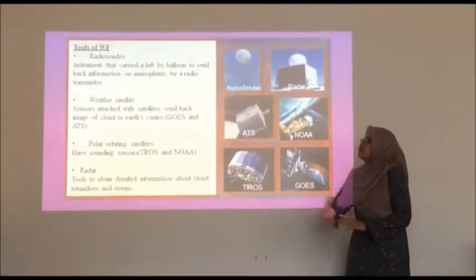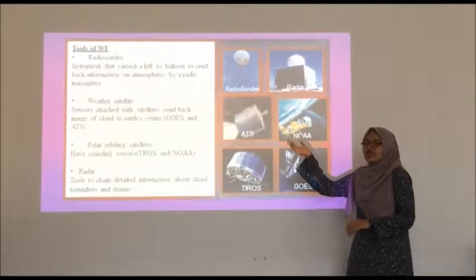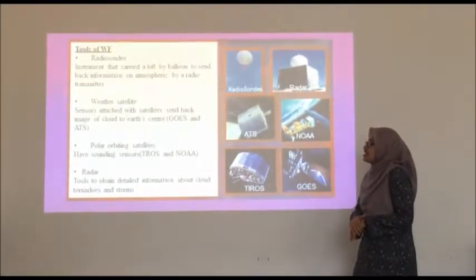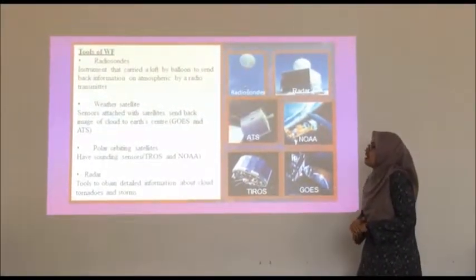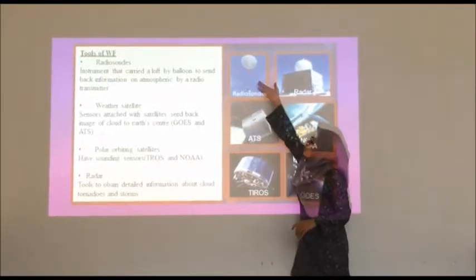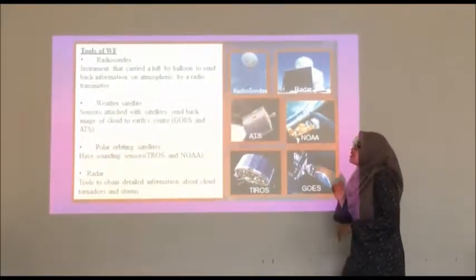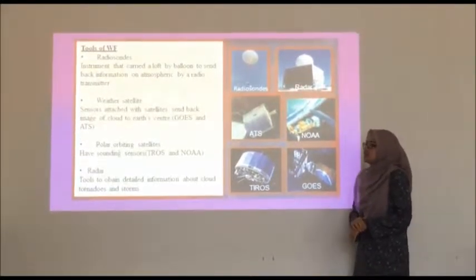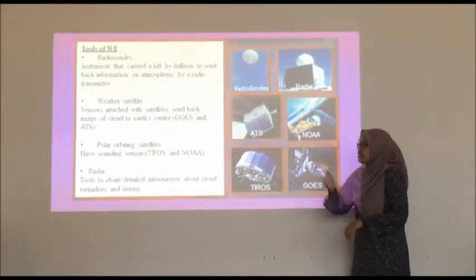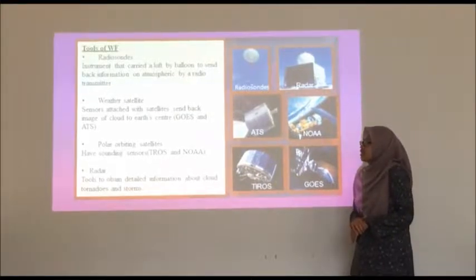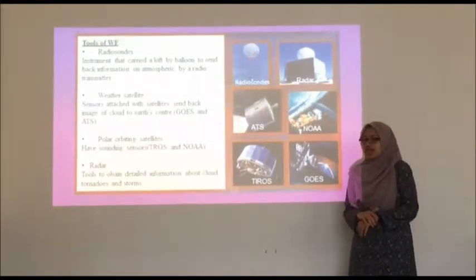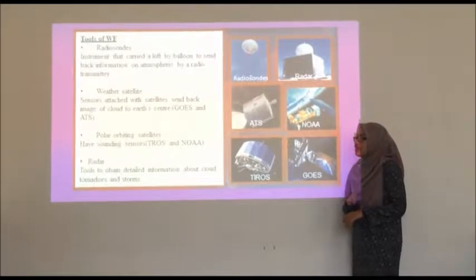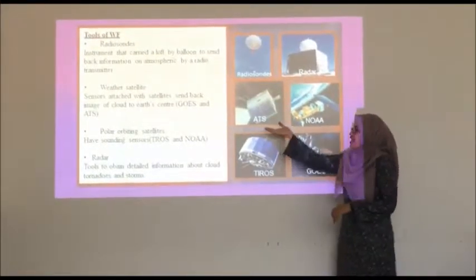Now I will explain tools of weather forecasting. First, we have radiosonde. Radiosonde is an instrument that is carried aloft by balloon. You can see here the balloon. It sends back information on atmospheric conditions by radio transmitter. Second, we have geostationary satellite. Sensors attached to satellite send back images of clouds to earth center. We have two types here: GOES and ATS.